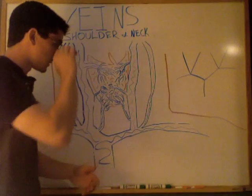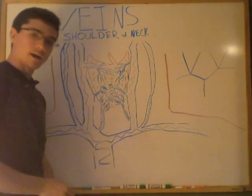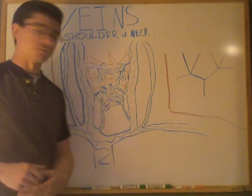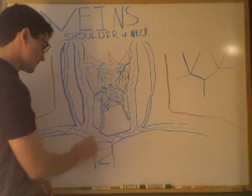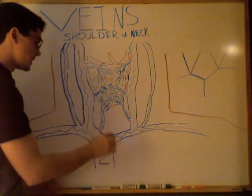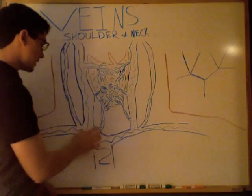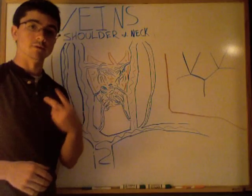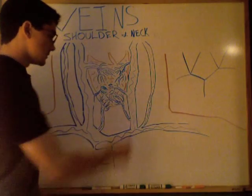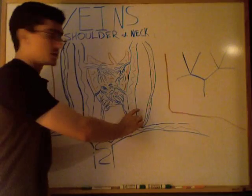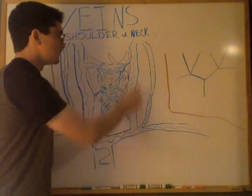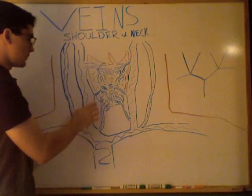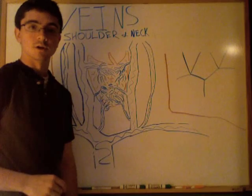We're going to work our way up and branch on the right and left sides, which is the brachiocephalic vein — the left and right brachiocephalic vein right here. This branches off into the jugular veins. The jugular veins are on both sides, and there are two: the internal and the external. Here we have the left internal jugular vein, which is this thick vein going up and down along the neck, and that's true on the right side as well.